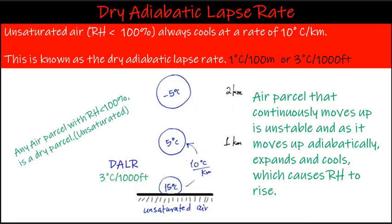Dry adiabatic lapse rate, or DALR: any air parcel with relative humidity less than 100% is called unsaturated air. Unsaturated air always cools at a rate of 10 degrees Celsius per kilometer. Remember that the dry adiabatic lapse rate is 1 degree Celsius per 100 meters, or 3 degrees Celsius per 1000 feet, or 10 degrees Celsius per kilometer.